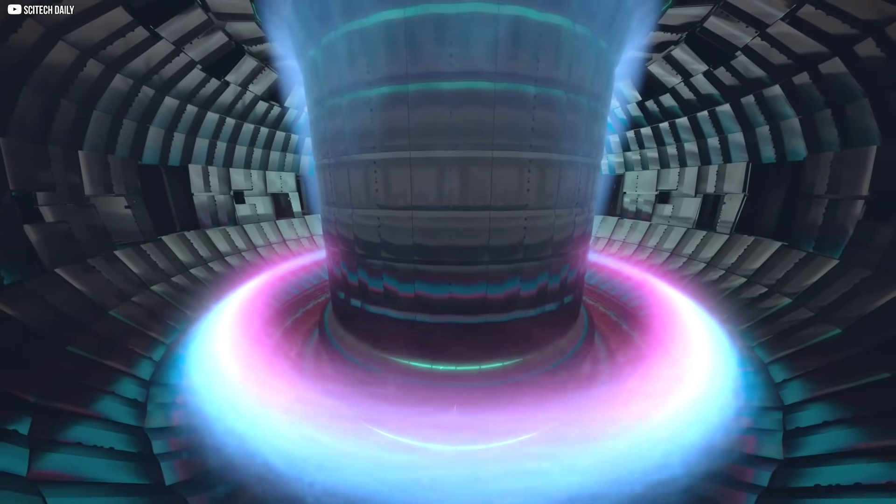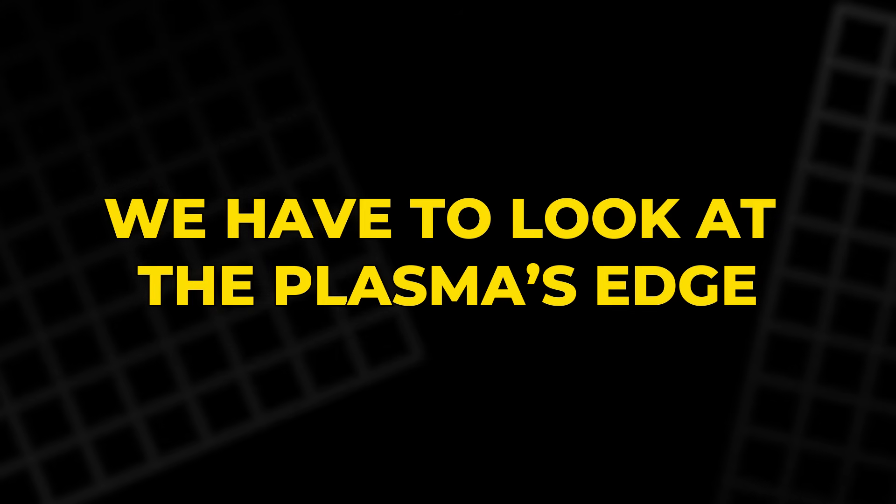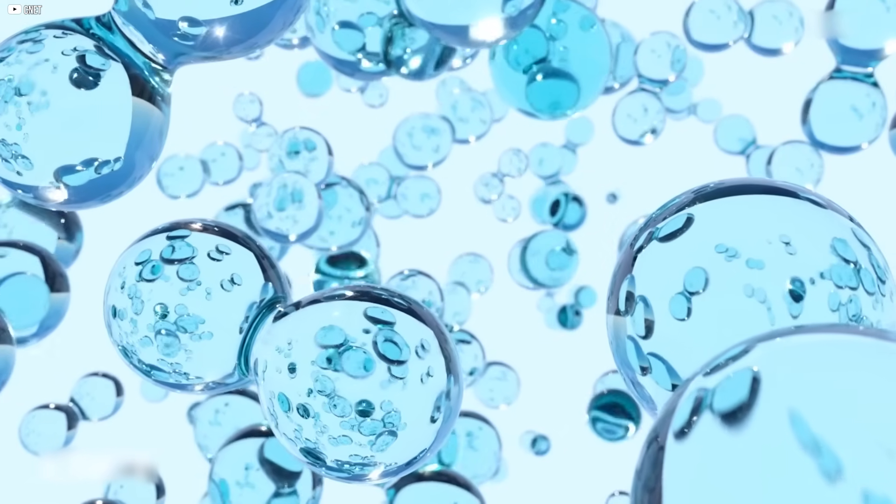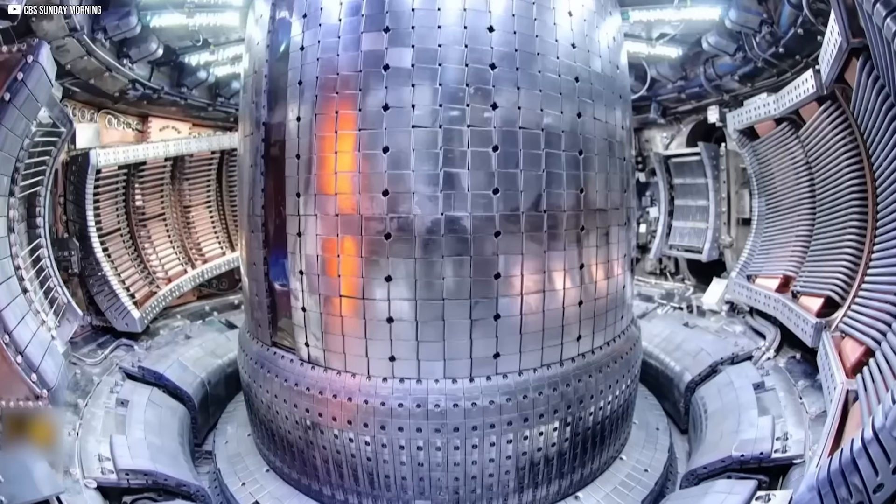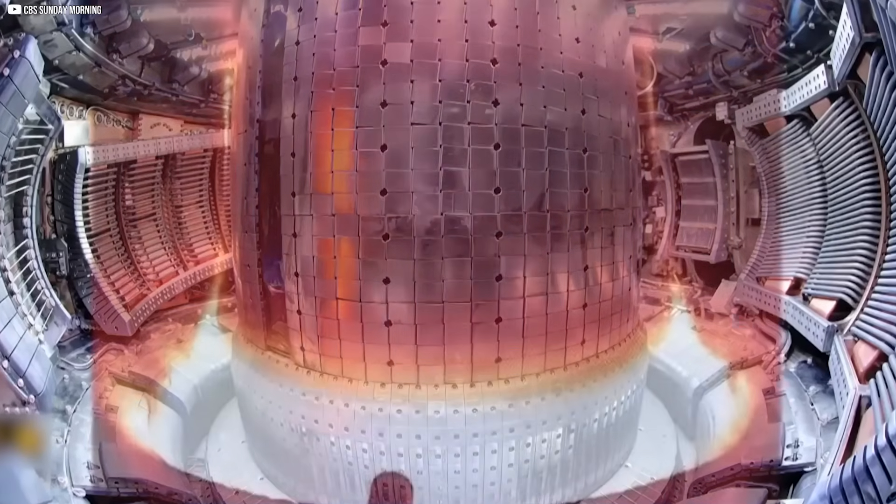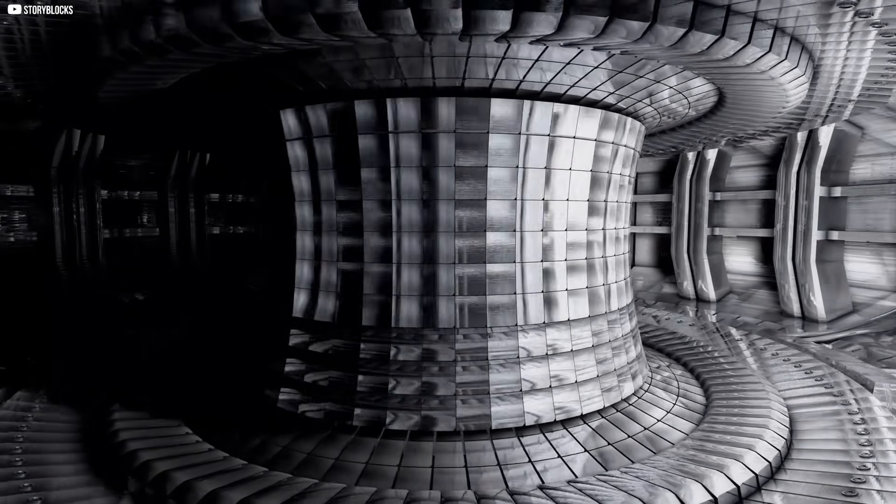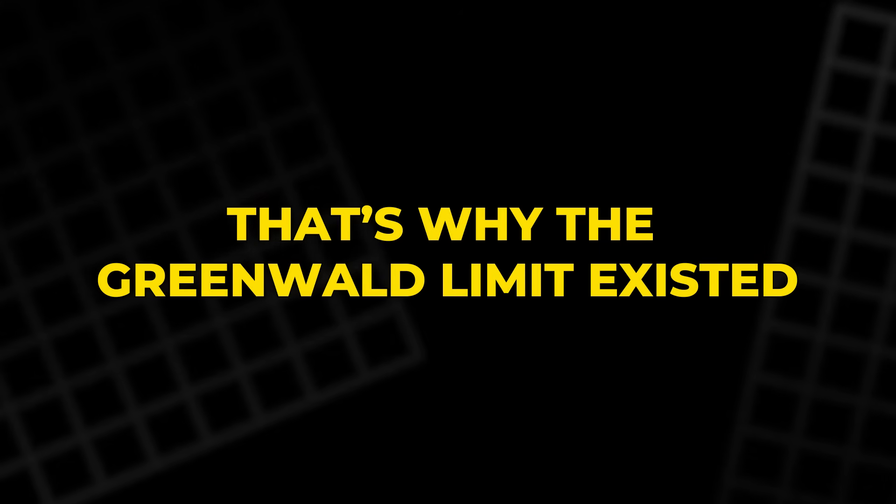To understand why density was limited in the first place, we have to look at the plasma's edge. As you increase ion density, the outer layer of plasma cools down. Cooler plasma is unstable. It can't hold pressure like hot plasma can. This creates an imbalance, disturbs the magnetic field, and eventually causes the plasma to collapse. That's why the Greenwald limit existed.